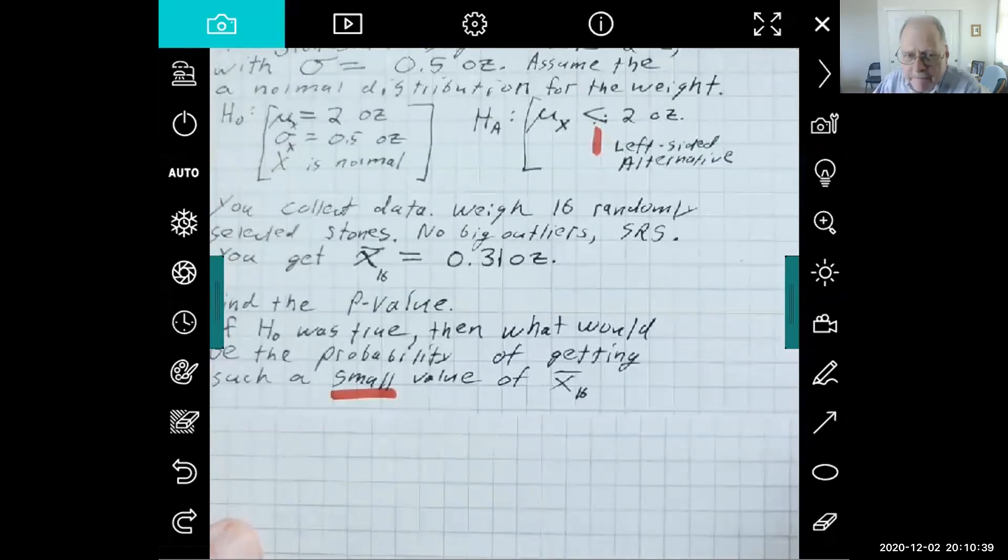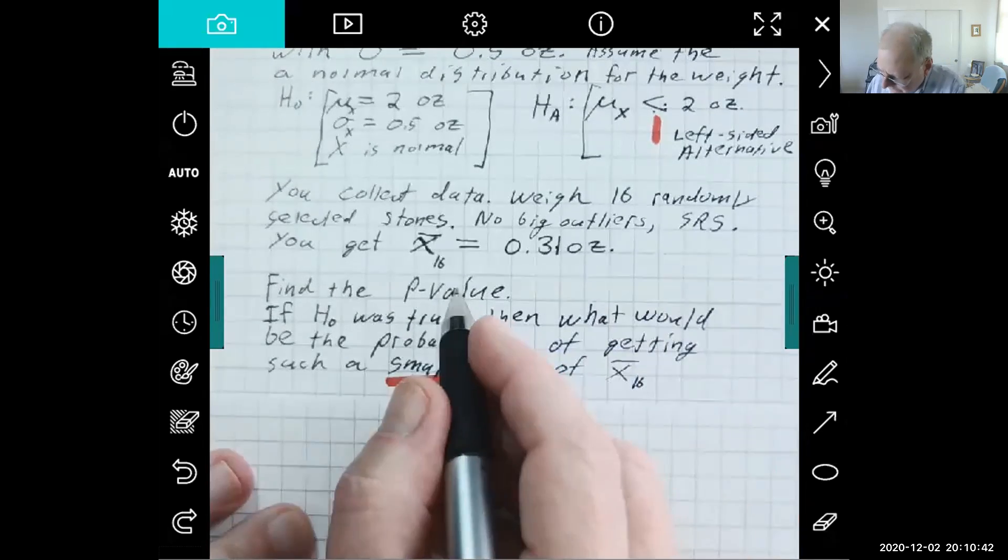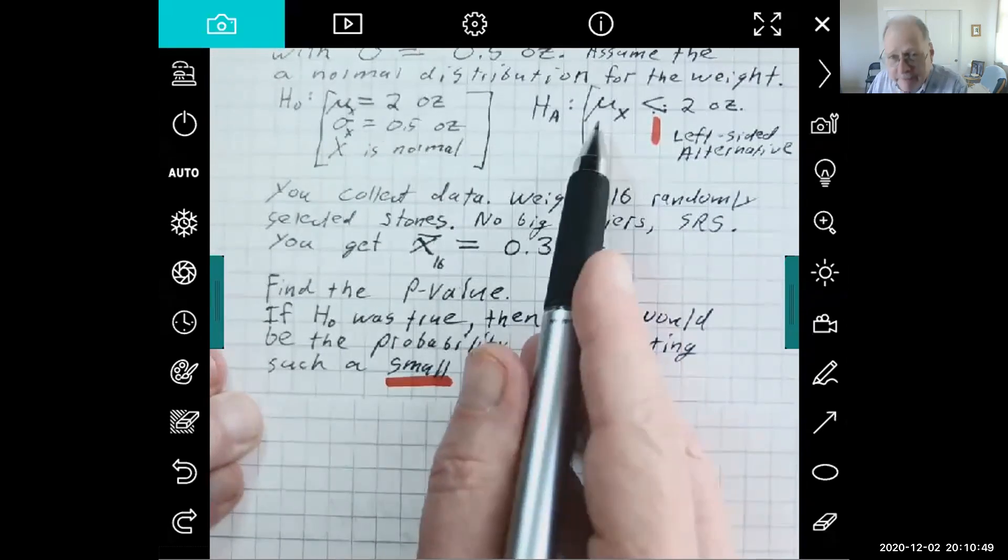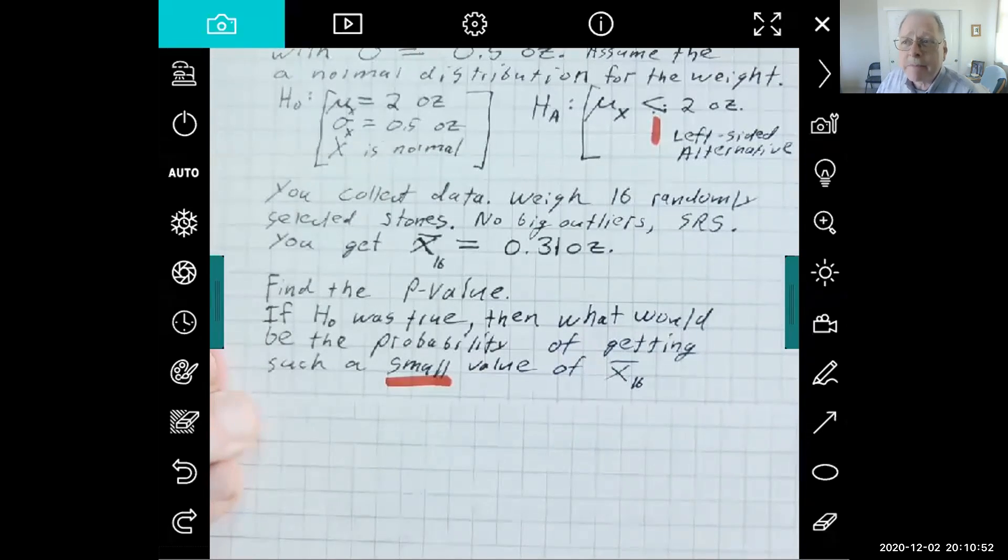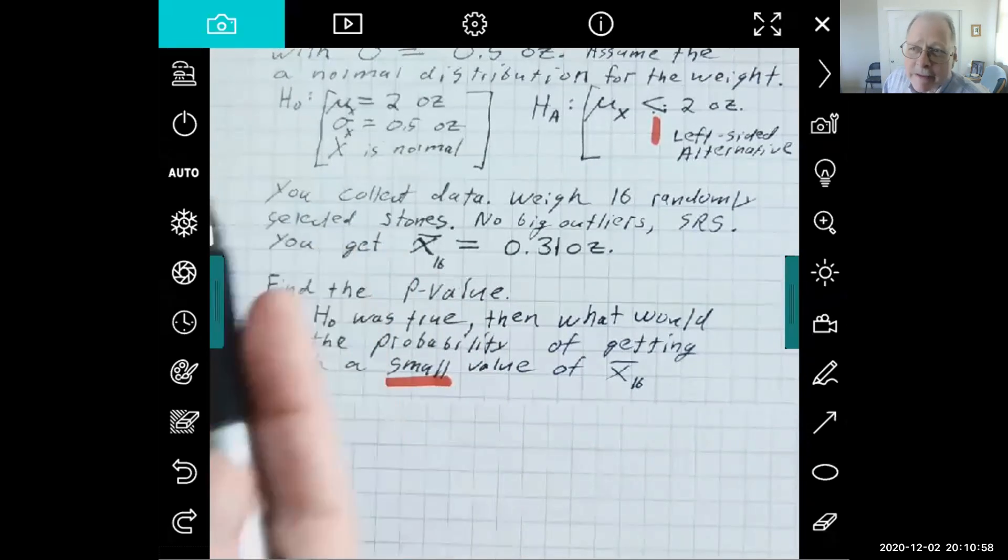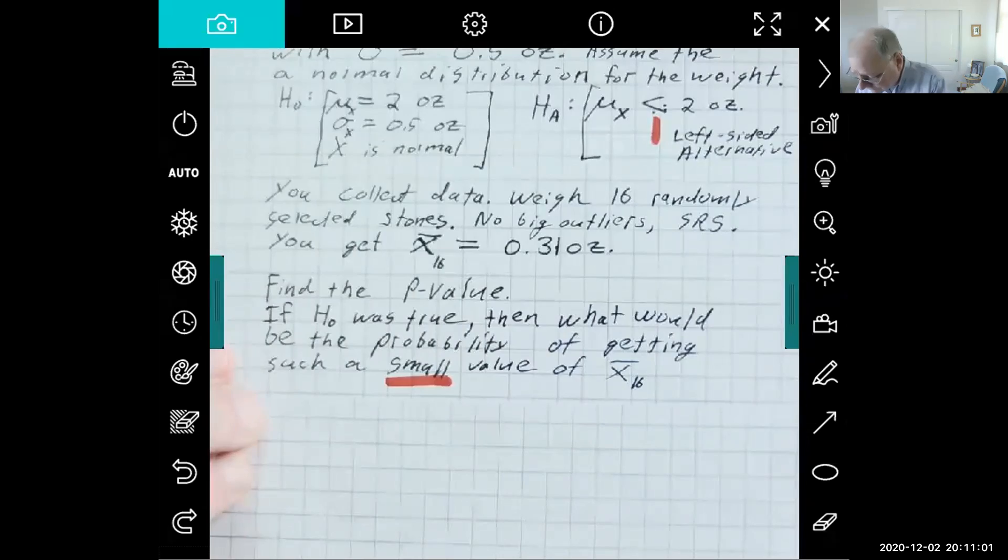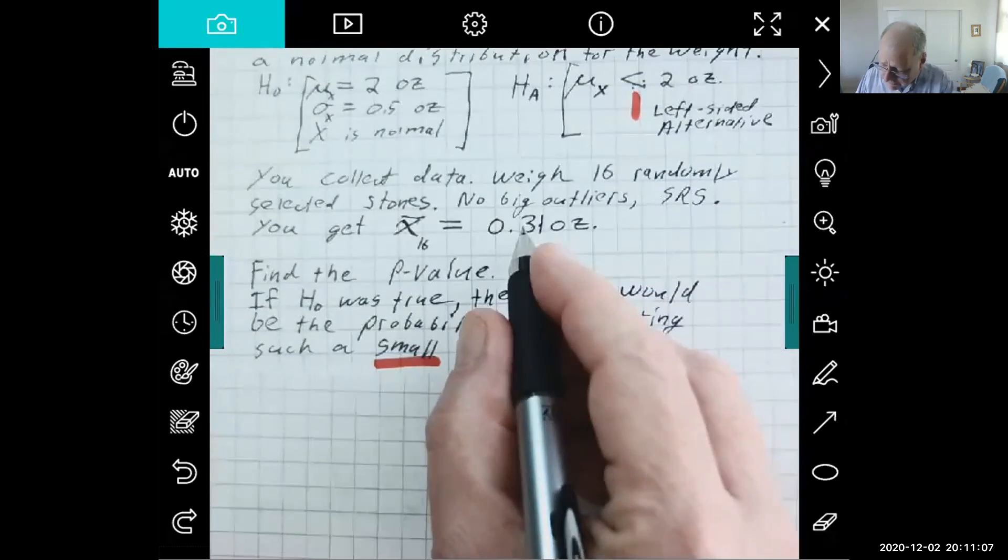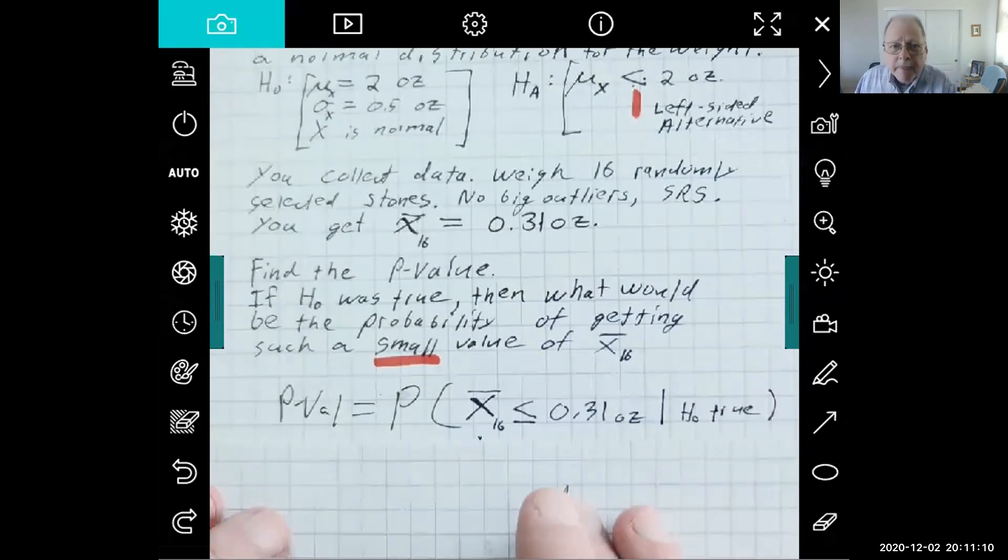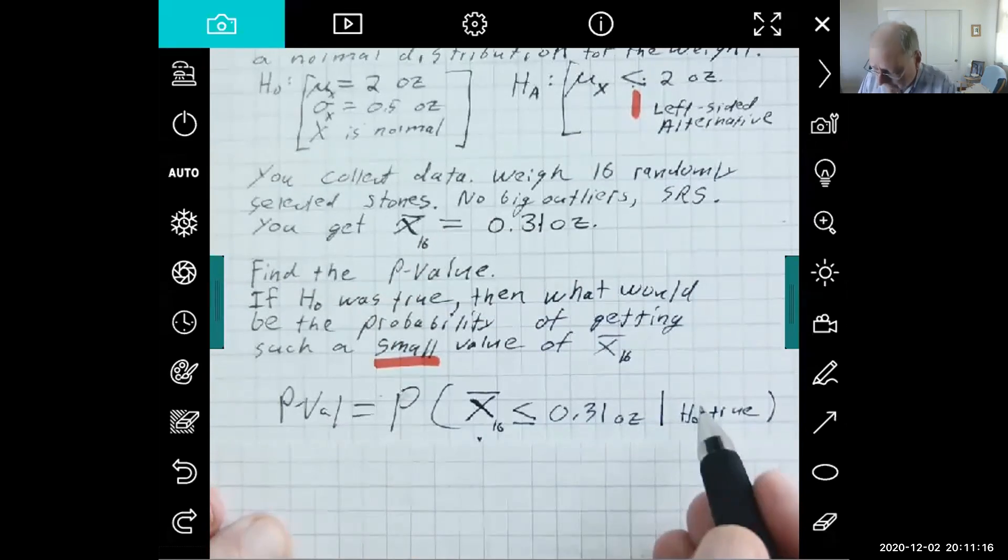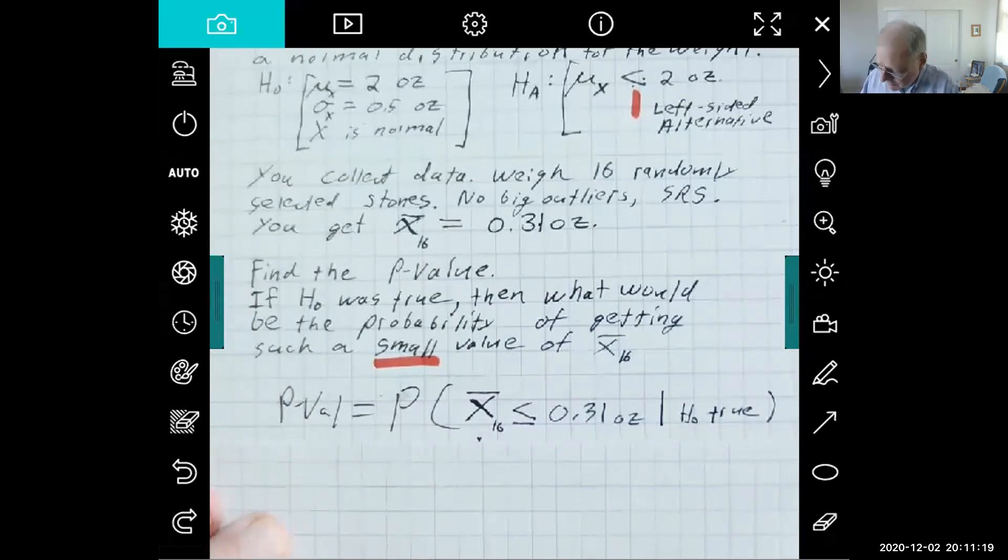Okay, so your job is to find the p-value to find out if my null hypothesis was true. Then what would be the probability of getting such a small sample mean? If the answer is it's not bloody likely, then you will convince me, well, I guess my null hypothesis must be wrong. So the p-value is the probability that you'd get a sample mean this small or smaller just by chance if the null hypothesis was true. You're hoping to see a real small number so you can convince me it didn't happen just by chance.